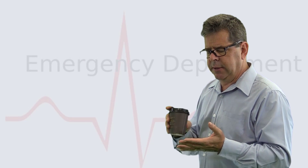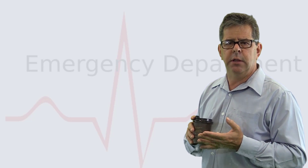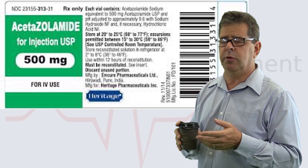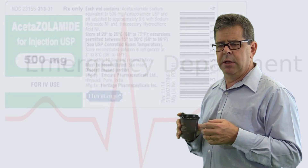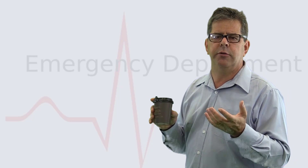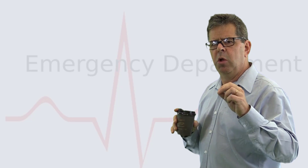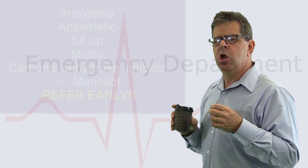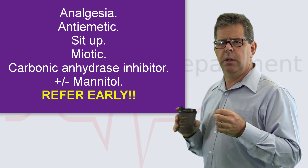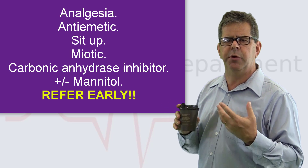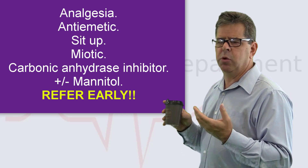After giving the miotic, analgesia, and antiemetic, you want to give a diuretic — a carbonic anhydrase inhibitor like acetazolamide (Diamox), 500 mg IV. There's a lot of carbonic anhydrase in the eye just waiting to be inhibited. Well before this point you should speak to your ophthalmology registrar or consultant, as this is an eye emergency. If not improving after 30 to 60 minutes they'll likely come in, and may ask you to give mannitol as another diuretic at 1 gram per kilo IV.